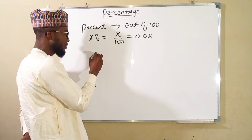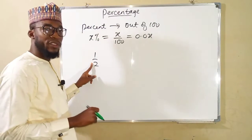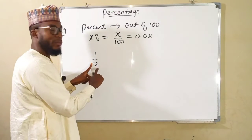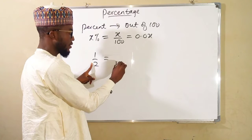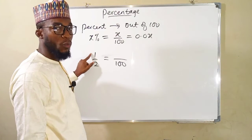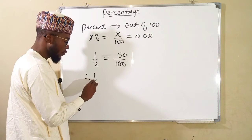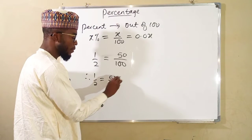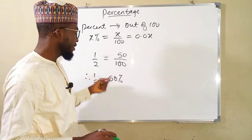First, we want to express 1 over 2 as a percentage. We want to transform the denominator 2 into 100, and therefore we multiply by 50. 2 times 50 is 100, and we also multiply 1 by 50, which gives us 50. Therefore, 1 half is equal to 50 percent — 50 out of 100 can be written as 50 percent.